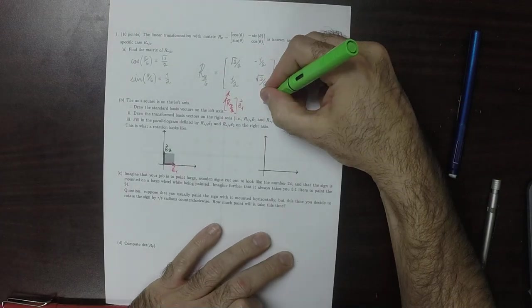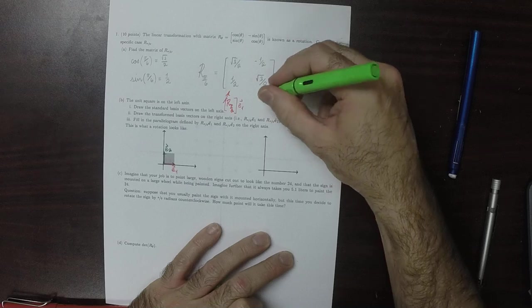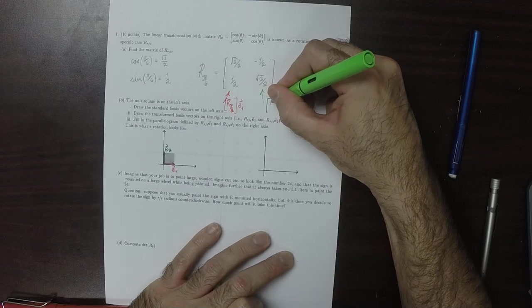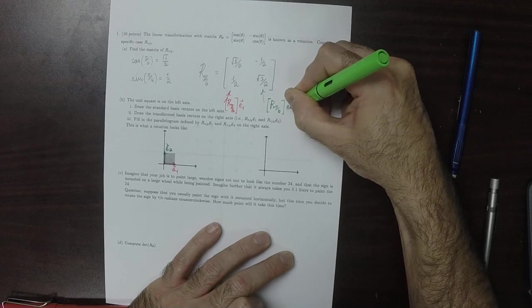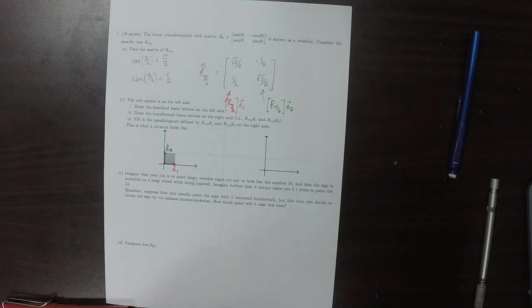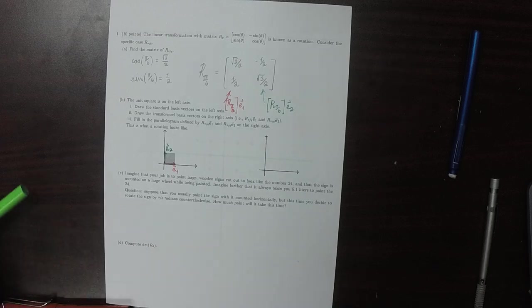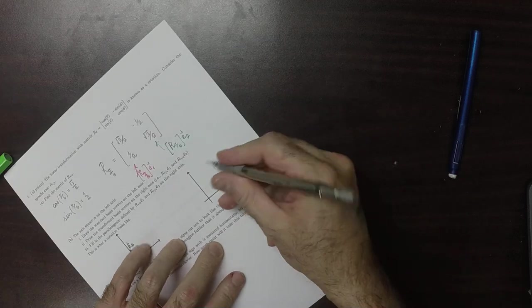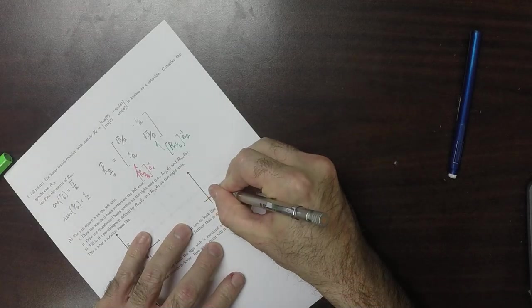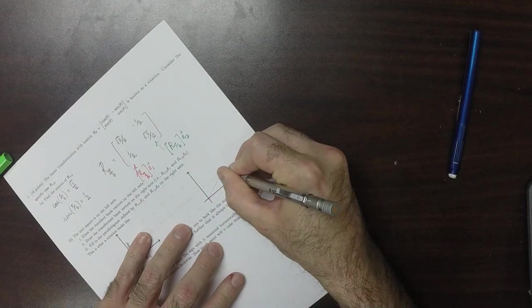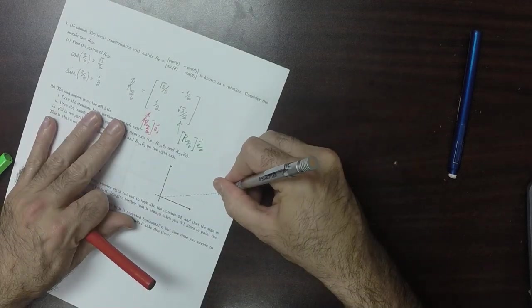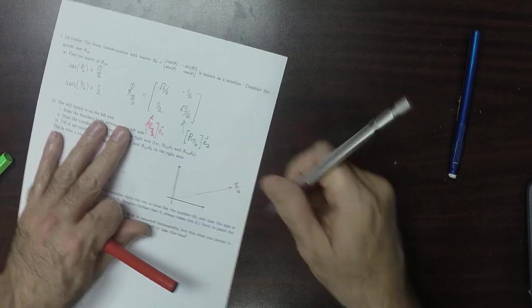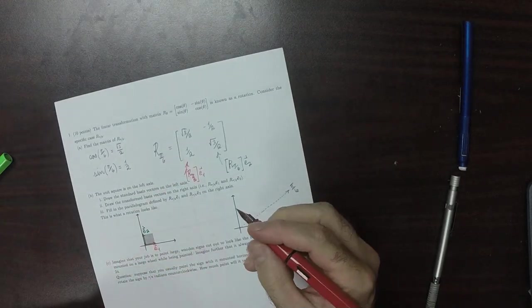And this one, that column is r 5 over 6 applied to e2. So they've been rotated pi over 6. So if this is angle pi over 6...